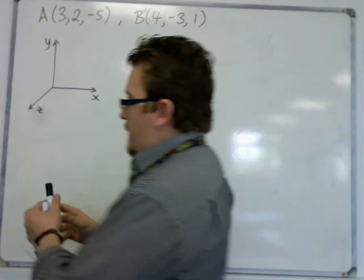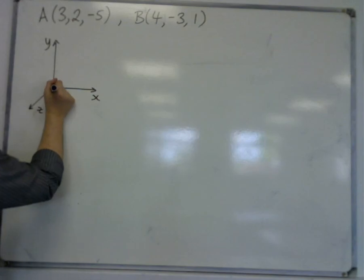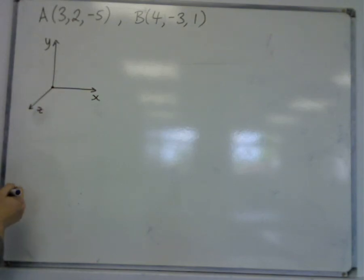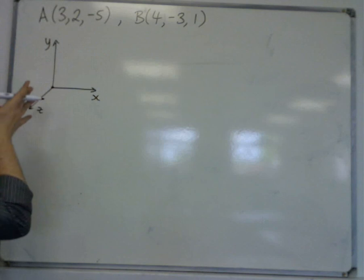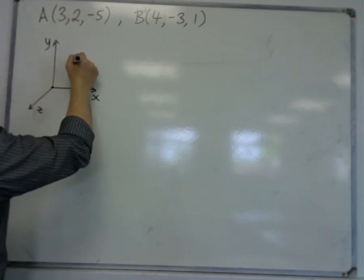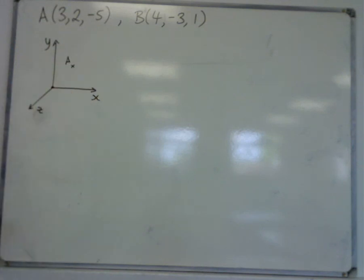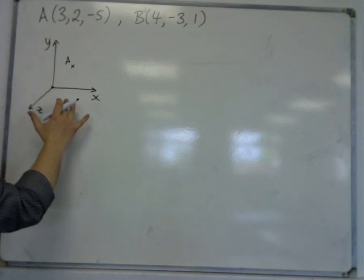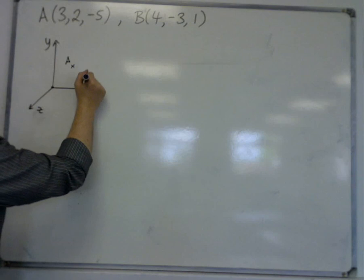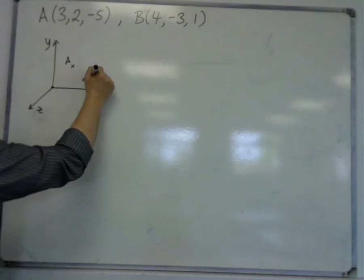So if this is x, y, and z, and this is our origin at (0, 0, 0), then A is at (3, 2, -5), so 3 along, 2 up, and minus 5 behind the board. I'm just going to put A here. And then B is (4, -3, 1), so it could be down then up a bit, but just for the sake of it I'm going to put B there.